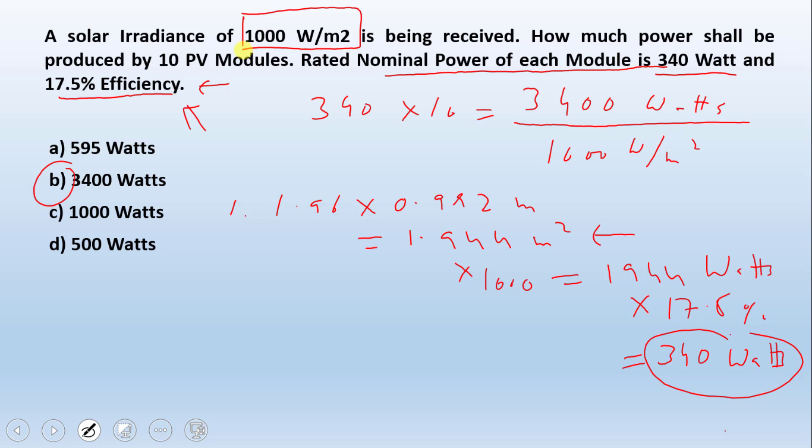Using that data you can calculate the nominal rated power of the module. But if the rated nominal power is given straightforward in the question, simply multiply with the number of modules to get the total power of the system. So here the correct answer is 3400 watts produced by the PV modules.